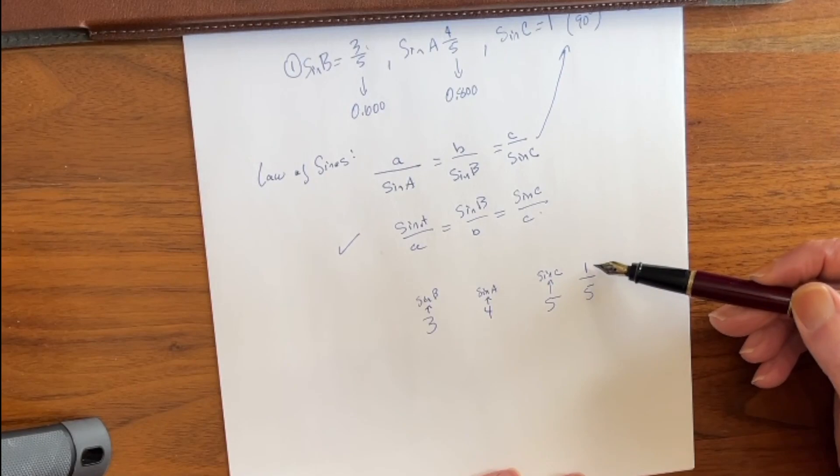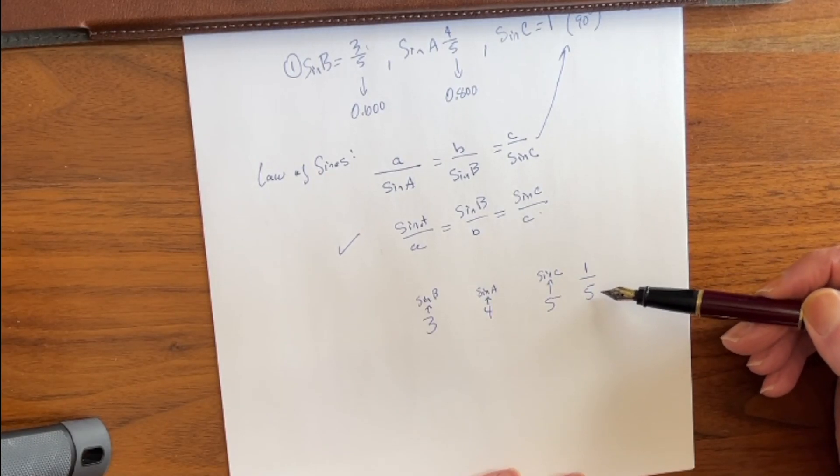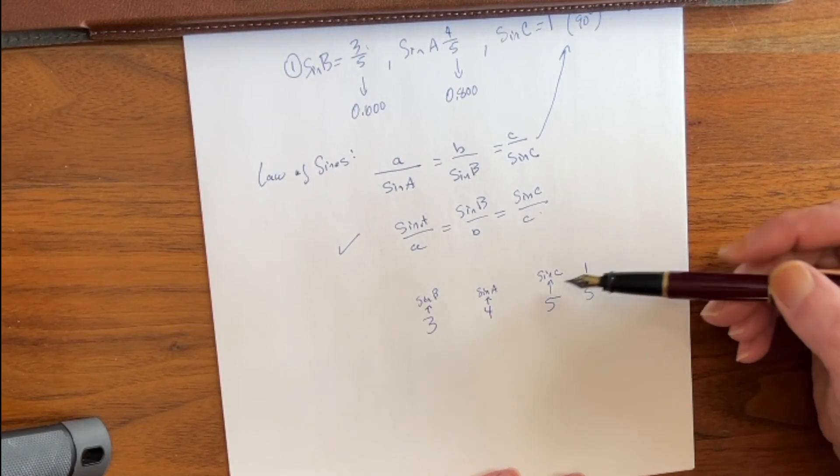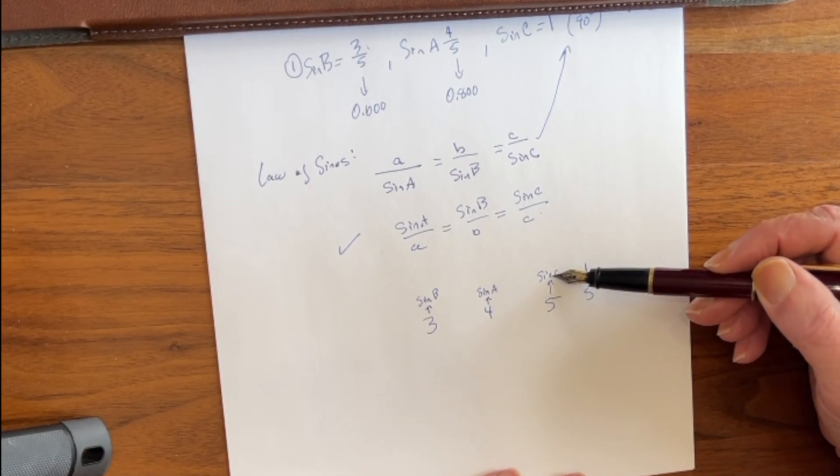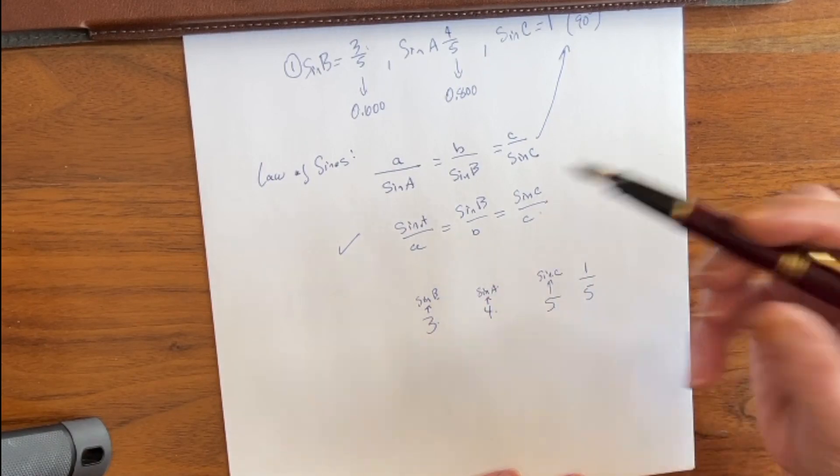So right now we're in a situation like this. We set the sine of 90 degrees above the length of the hypotenuse, which is 5. And as a result, the sine appears directly above the length of the leg.